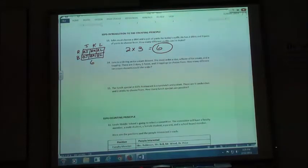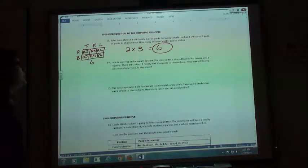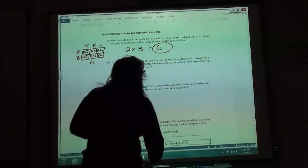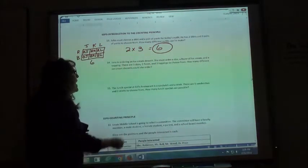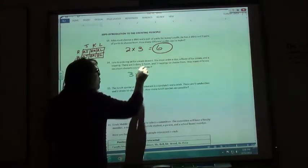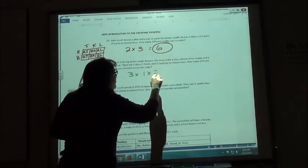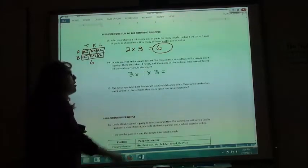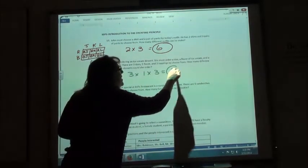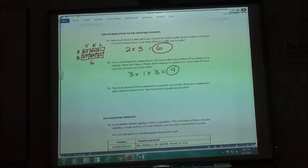Same thing if I have a longer list. Jane is ordering an ice cream dessert. She must order a size, a flavor of ice cream, and a topping. There are three sizes, one flavor, and three toppings. How many different ice cream desserts could she order? Well, three times one times three would be nine different ways I could make my ice cream dessert.